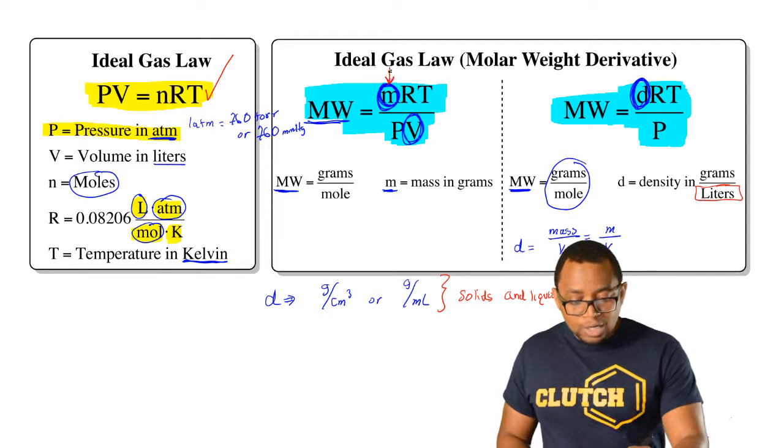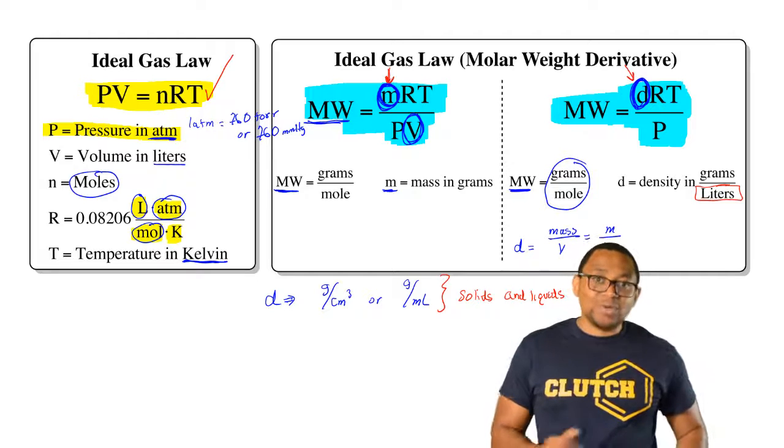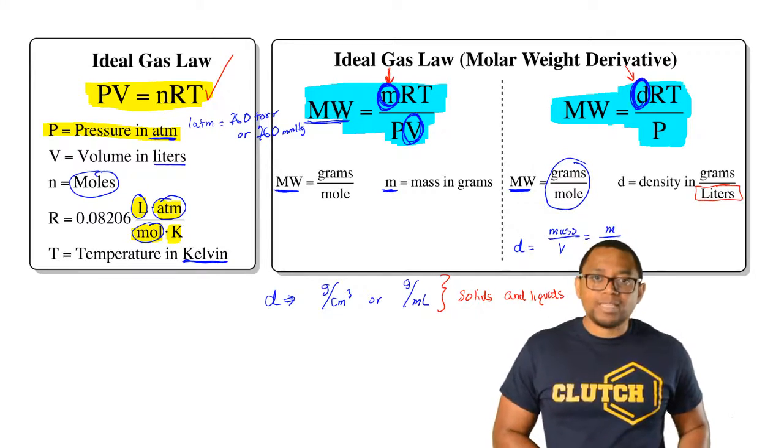If they give us the mass in grams, we'd use this first version. If they're referring to the density of the gas, we use this third version here. So just make sure you remember the different versions of the ideal gas law and when to apply them.